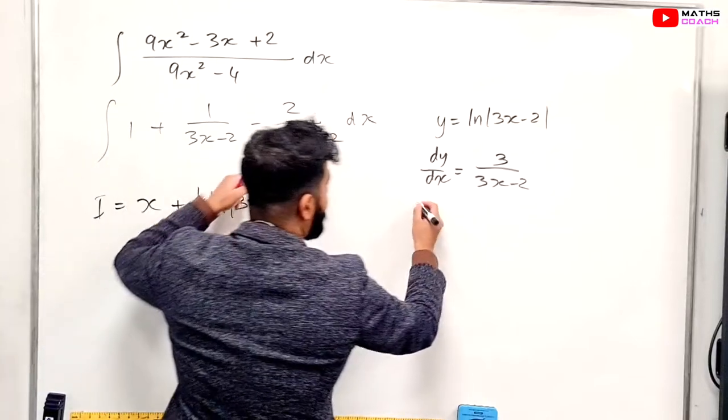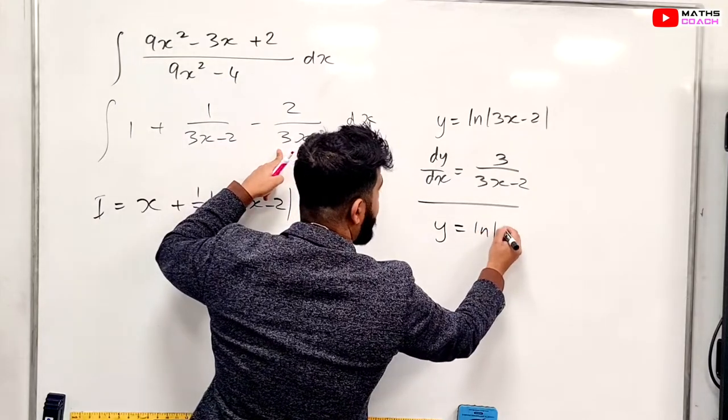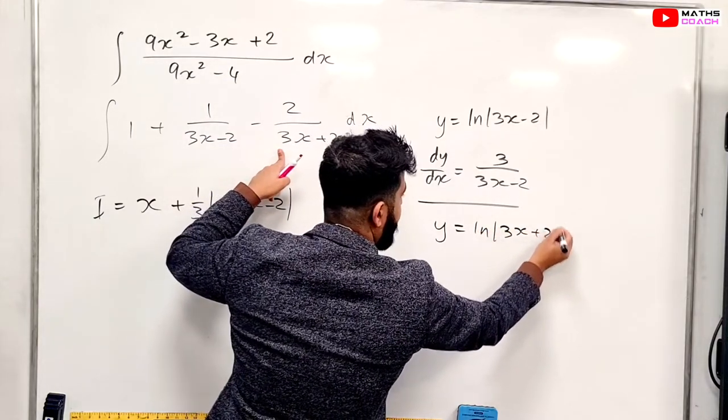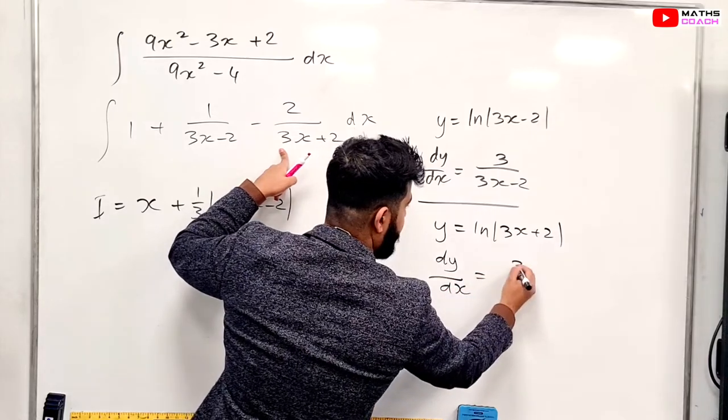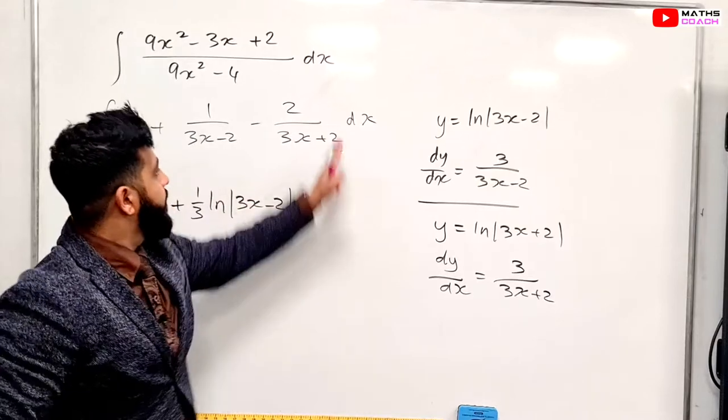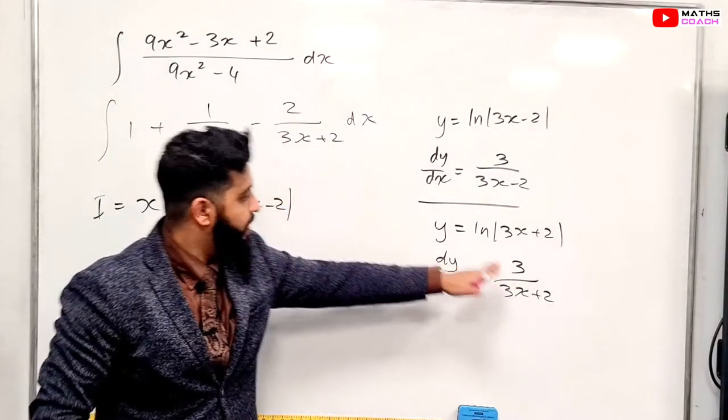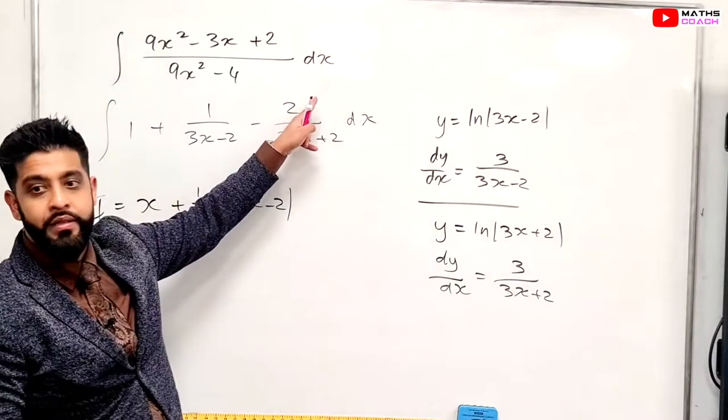Do the same thing for this one. So y, we're going to do our consideration here. So y is equal to ln 3x plus 2. And dy over dx would be 3 over 3x plus 2. If you look at this and what we have, we want to get rid of that 3 and we want a 2 in that place.